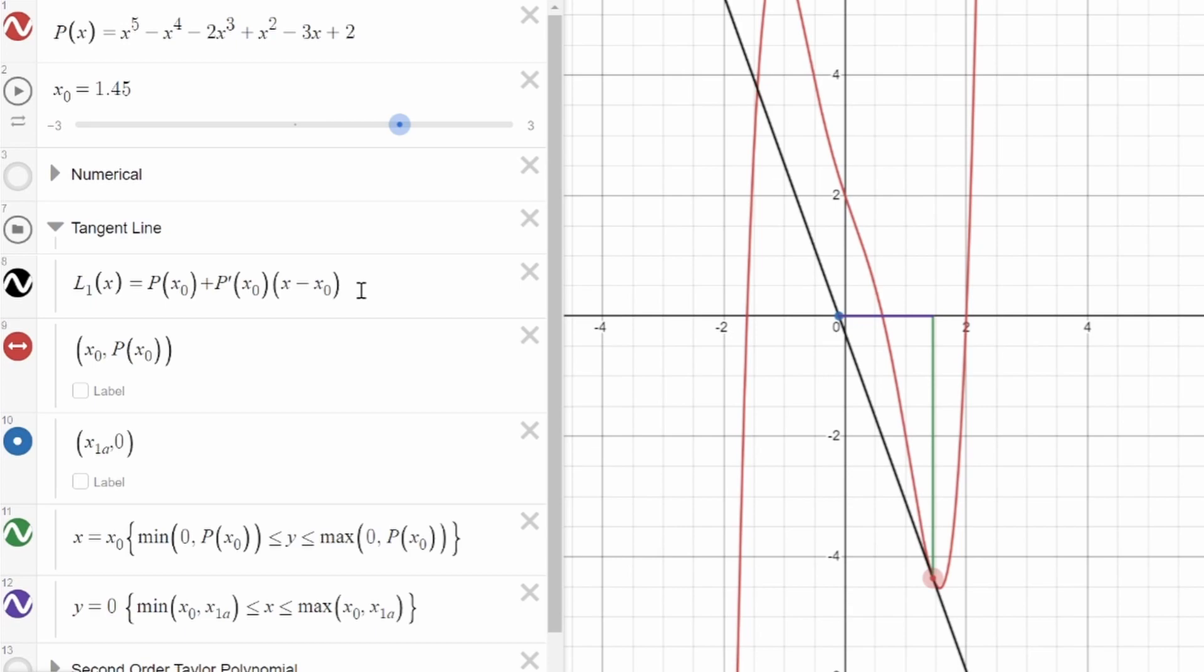What this allows us to do is, instead of solving for the roots of the original polynomial, which is often an impossible task, we can instead simply find out where the tangent line crosses the x-axis. And that's a much easier thing to do, since this approximation is a line, which is a much simpler thing to deal with than a fifth order polynomial.